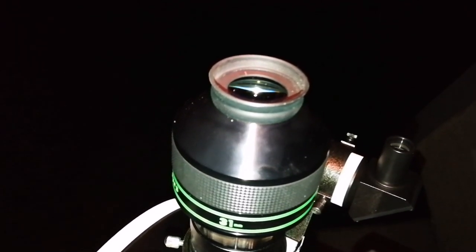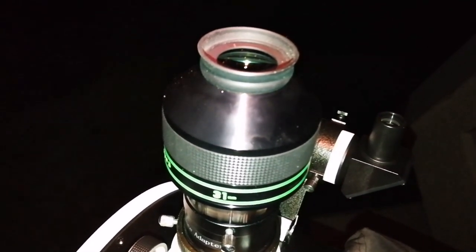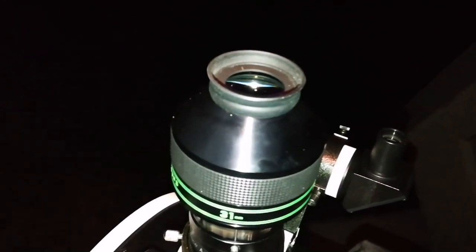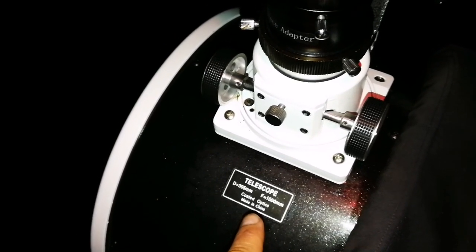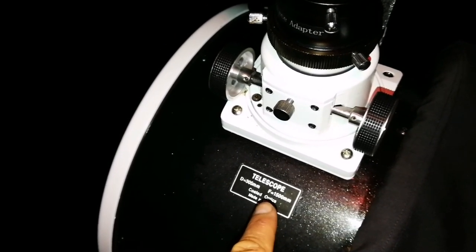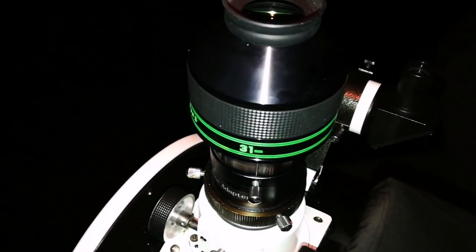The telescope I'm using is the Sky-Watcher Skyliner 300P, 12-inch Dobsonian telescope. Focal length is 1500, and divided by 31 it gives a low magnification of 41.